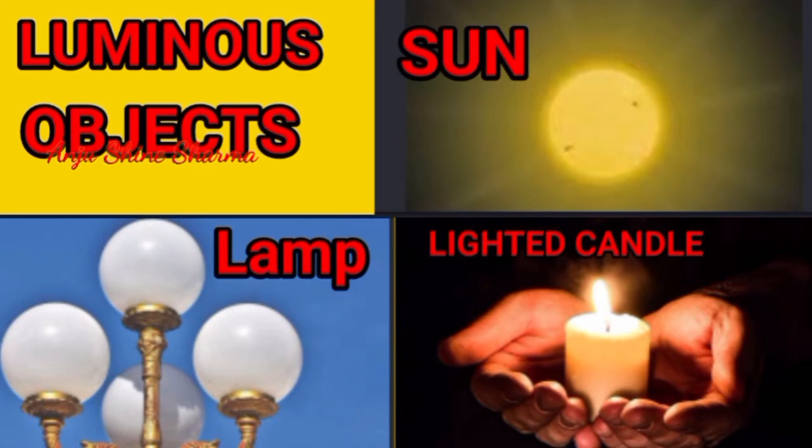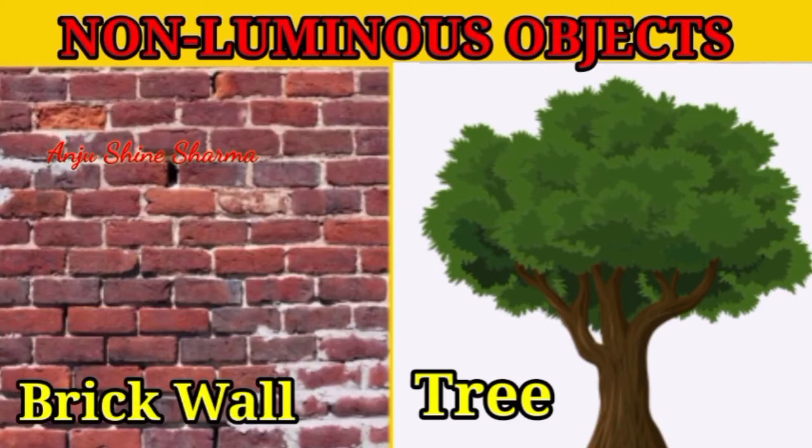Examples of luminous objects are: stars, glowing electric bulb, lighted candle and gas burner. Non-Luminous Objects are objects that do not emit their own light. They only reflect light coming from luminous objects. Objects are not visible in the dark unless light falls on them.